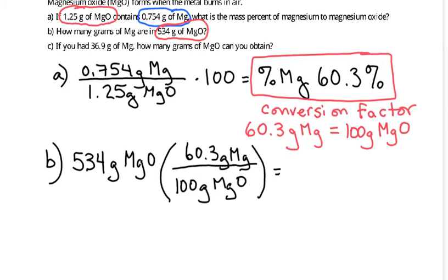For every 100 grams of magnesium oxide, there's 60.3 grams of magnesium. Double check, make sure everything cancels like it should. Grams of magnesium oxide cancels with grams of magnesium oxide. We're left with grams of magnesium, which is what we're looking for. So this is 534 times 60.3 divided by 100 gives us 322 grams of magnesium.